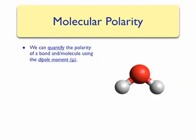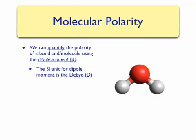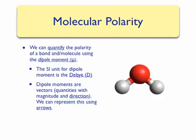We can also quantify the polarity of a bond or a molecule using the dipole moment. The dipole moment is a quantity that depends on the distribution of charge and the distance. In chemistry, when we look at a molecule, this is going to depend on the electronegativities of the atoms and the bond distance. The SI unit for dipole moment is the Debye. Dipole moments are vector quantities — they have both a magnitude and a direction.